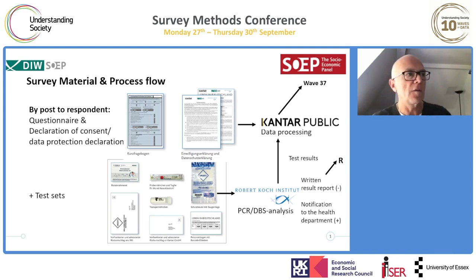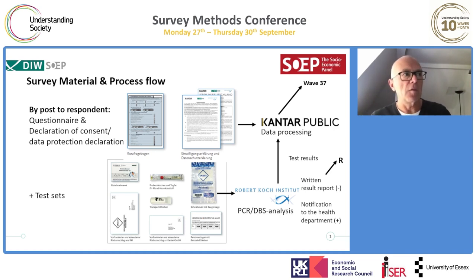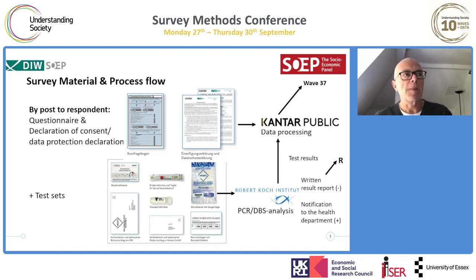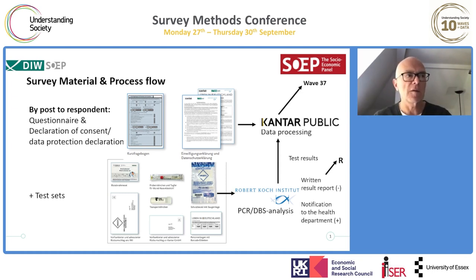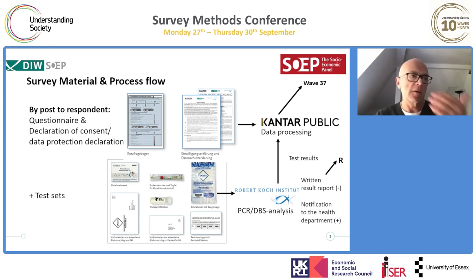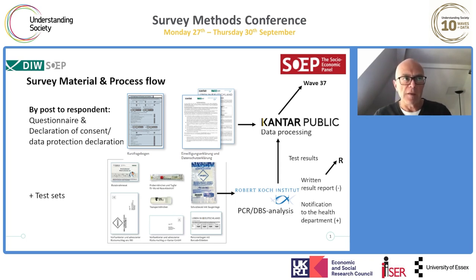Respondents received by mail a questionnaire and two test sets — one for the PCR test and one for the DBS test. Completed questionnaires were mailed to the survey institute Kantar Public, who handled data processing. The self-administered tests were sent to the Robert Koch Institute where all PCR and DBS analysis was conducted. Respondents received notification of whether tests were positive or negative.